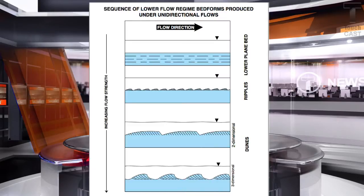At low velocity flows of fine grains, ripples are formed, but as the grains become too large they are unable to build up into ripple mounts. Instead, the grains roll, creep, or slide along the river bed to form lower plane beds. At higher flow velocities it then transitions into dunes instead of horizontal beds.